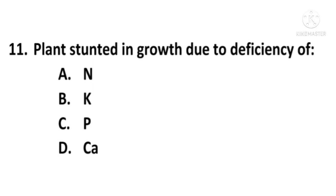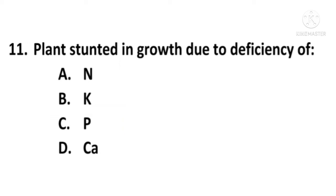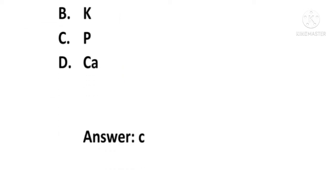Next question: Plant stunted in growth due to deficiency of — A) N, B) K, C) Phosphorus, D) Ca. The correct option is C, Phosphorus. Plant stunted in growth due to deficiency of phosphorus; C is the correct option.